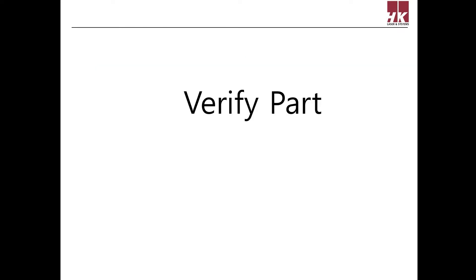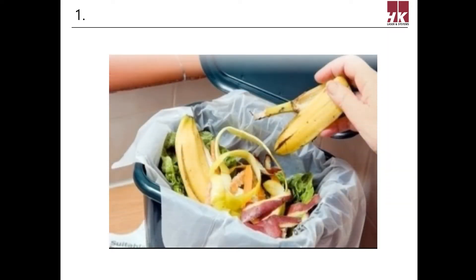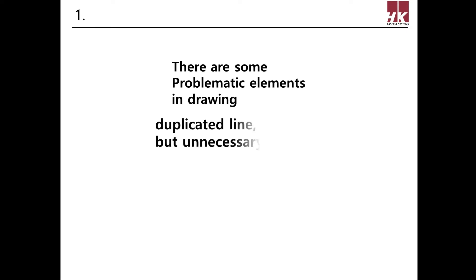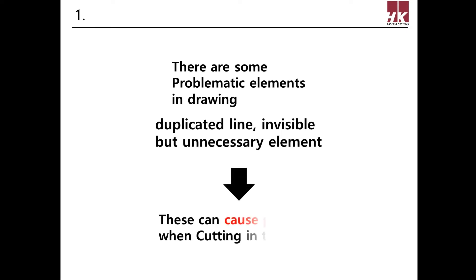There are four reasons why verify part must be done. In CAD files, there are small and unnecessary elements which are invisible. For example, duplicated lines or broken lines which are within tolerance or not yet cleaned. Duplicated lines cause multiple cutting and broken lines cause dash cutting. These cutting issues cause not only ineffective cutting but also low cutting quality, so these defects must be corrected with verify part.